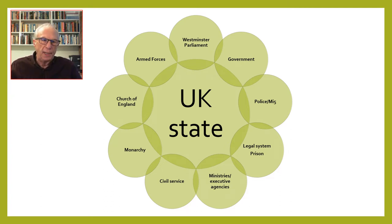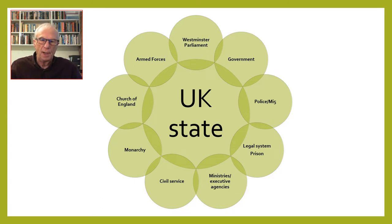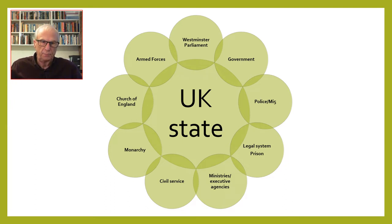As mentioned in the last session, the easiest way to understand the abstract concept of the state in its UK form is by examining its parts. This is how you would understand something like the UK's public transport system or the National Health Service. You can't point to the NHS as a whole, but you can identify hospitals, GP surgeries, nurses, doctors, surgeons, and other parts that come together to make up what we call the NHS — you conceive of the whole through its component parts.